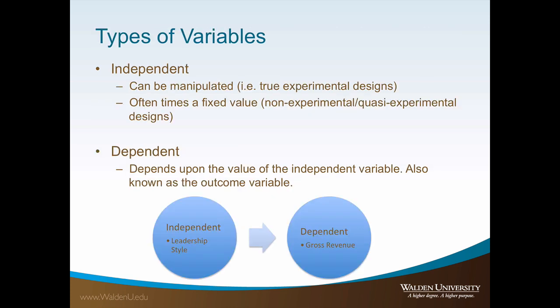There are two basic types of variables: independent and dependent. Independent variables are variables that you expect to be related to or have some impact or influence on the dependent variable. The independent variable can be manipulated, such as in a true experimental design, or it is often a fixed value, such as in a quasi-experimental or correlation design.